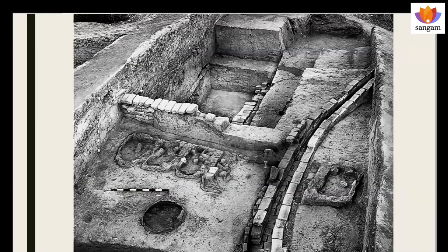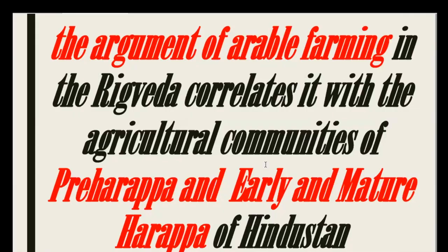Why seven and eight? There were originally eight sons of Aditi, a great goddess of the Rig Veda, but only seven of them were of divine origin and were worshipped. Martanda, the eighth son, was not worshipped. In the Mature Harappan Kalibangan, we have the famous photograph, probably taken by the late Braj Basi Lal while excavating this site, which demonstrates a row of seven altars. I connect them with the worshipping of the seven sons of Aditi. The argument of arable farming in the Rig Veda correlates it with the agricultural communities of pre-Harappan and early and Mature Harappan Hindustan.